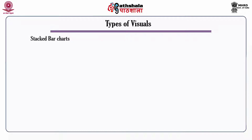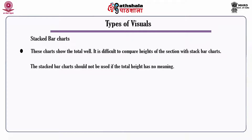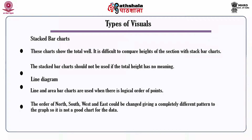Stacked bar charts show the total well, but it is difficult to compare heights of sections; they should not be used if the total height has no meaning. Line diagram: line and area bar charts are used when there is a logical order of points. The order of north, south, west and east could be changed, giving a completely different pattern to the graph, so it is not a good chart for such data.